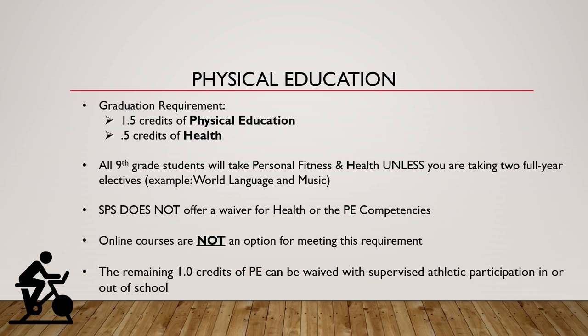The graduation requirements are 1.5 credits of physical education — or three classes — and 0.5 credits of health. We try to sign up all ninth graders, unless you're doing two full-year elective courses, to take personal fitness and health, so we can knock out half of that requirement. We don't offer waivers as a district for health or the PE competencies. Even if you did sports through Lincoln, you would still need to take a PE competencies test before you graduated. Online courses are not an option for meeting this requirement. It will stop you from graduating — make sure you get this sorted.